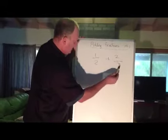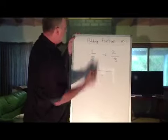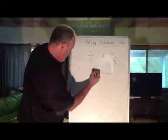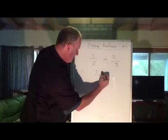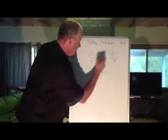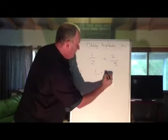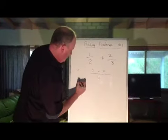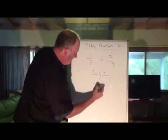Now what goes here? That one times that one, three ones, three. Plus, this way now, two twos, that goes there. Two twos, four. Three plus four, seven. Seven over six.